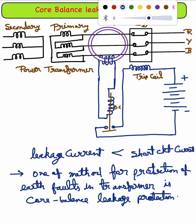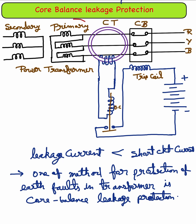The three primary conductors are surrounded by the magnetic circuit of a current transformer. This has a single secondary winding connected to the relay operating coil.